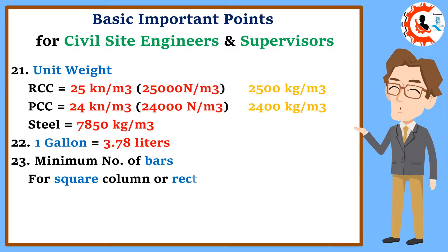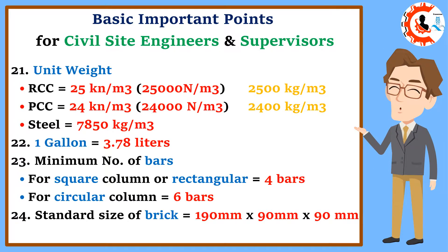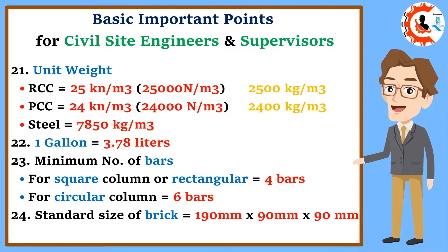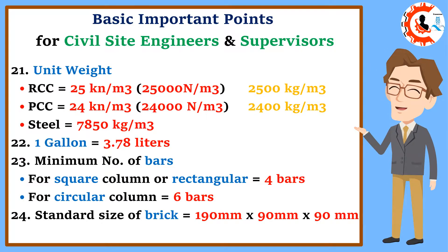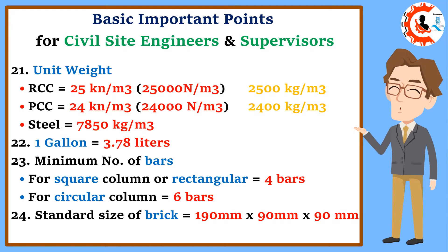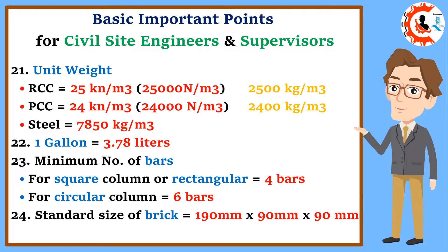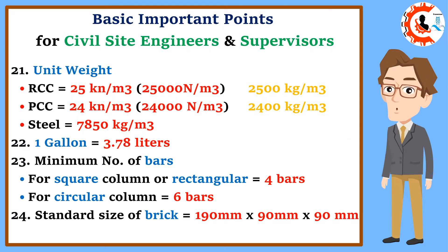21. Unit weight: Reinforced cement concrete equals 25 kilonewton per cubic meter (25,000 newton per cubic meter). Plain cement concrete equals 24 kilonewton per cubic meter (24,000 newton per cubic meter). Steel equals 7,850 kilograms per cubic meter.